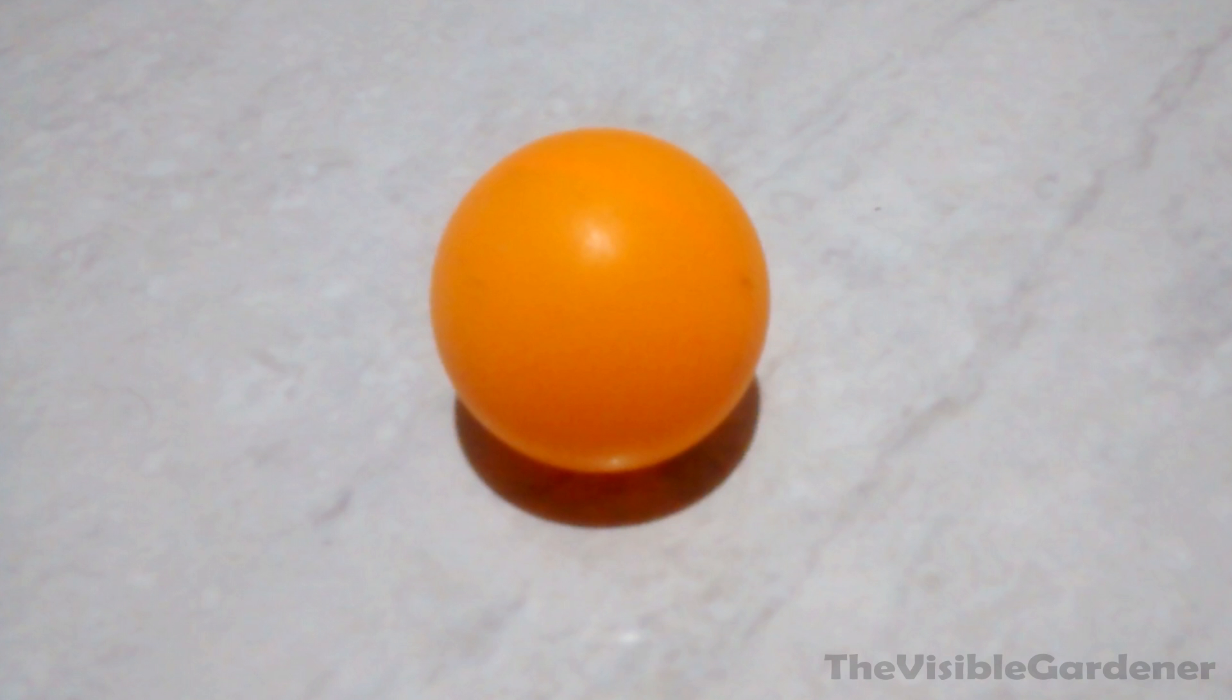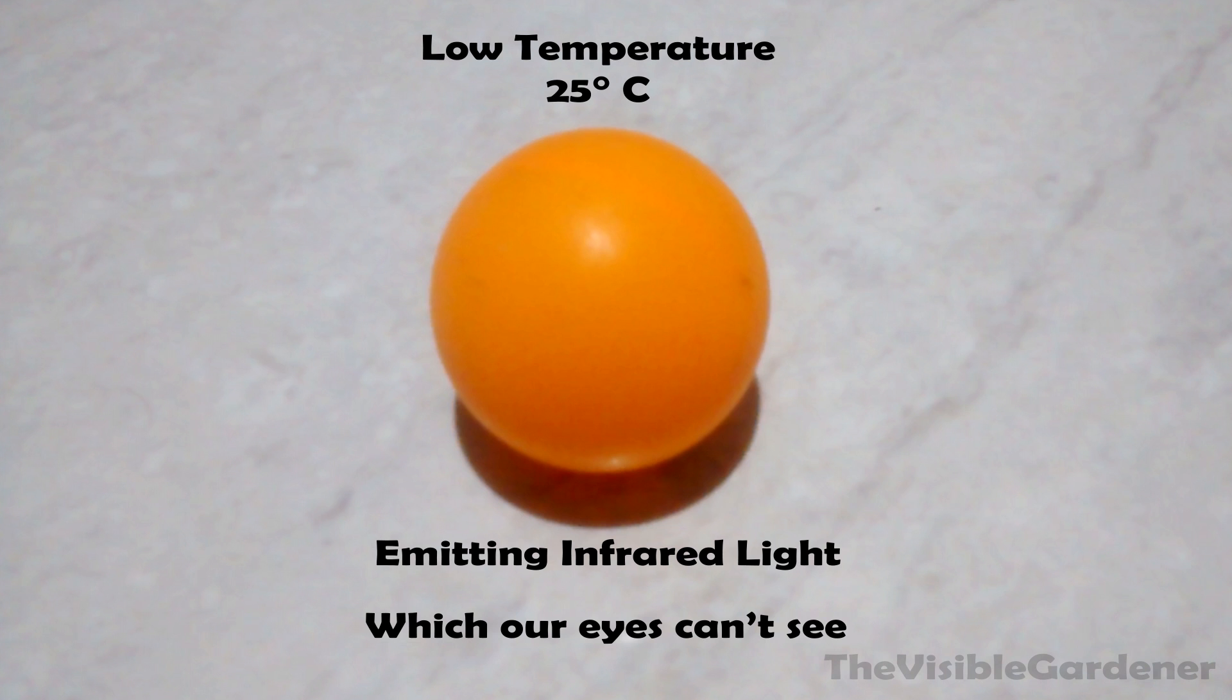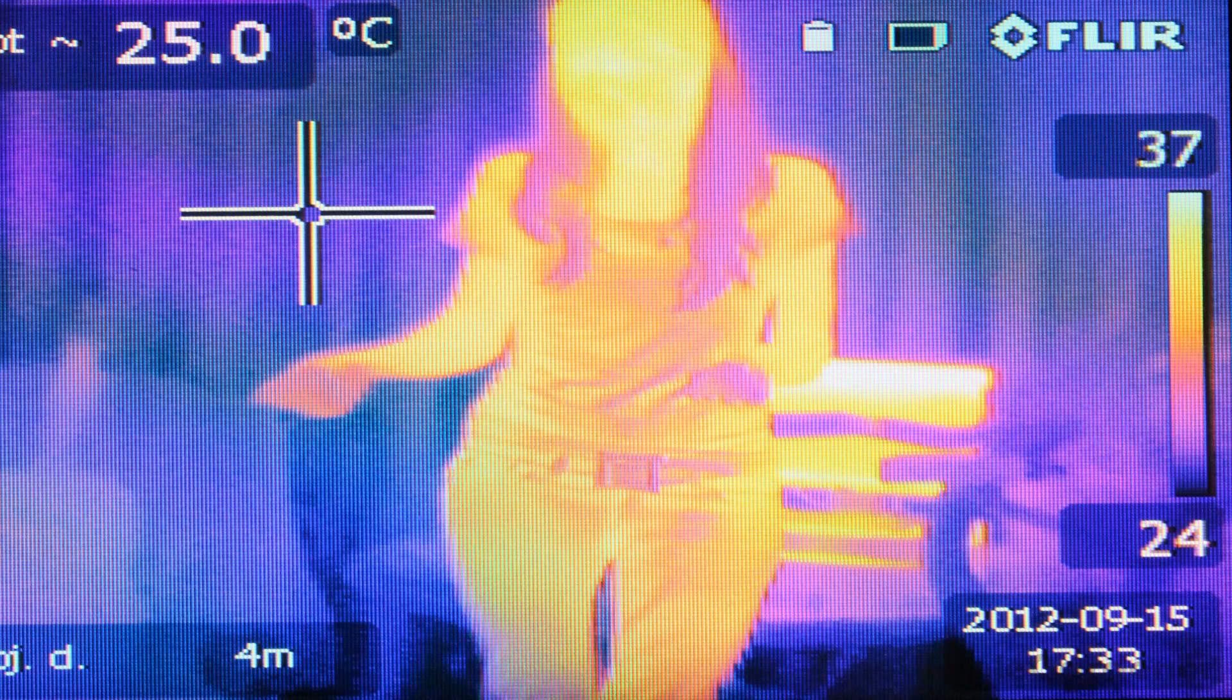Now because of its relatively low temperature, the ball is emitting light at a wavelength called infrared, which our eyes cannot see. But infrared light can be detected by instruments, and this is how some night vision cameras work. They detect the infrared light emitted by objects due to their temperature.